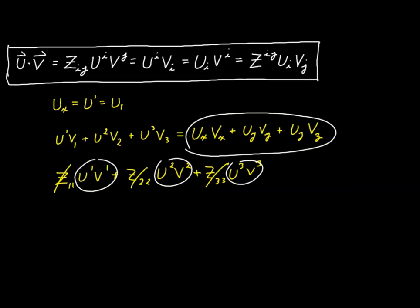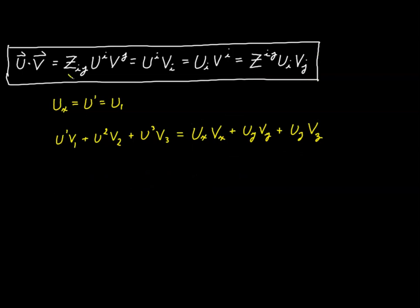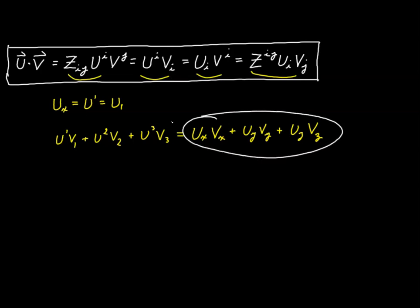I'll leave it to you to go through the same exercise with the contravariant metric tensor expression z^ij u_i v_j. Only the diagonal elements exist there too, and they're all one, so the same thing happens — just with indices in the lower position. You can see that each of the four expressions all result in exactly the same result: the known dot product formula for Cartesian coordinates. So we can safely say our expression works for Cartesian coordinates.